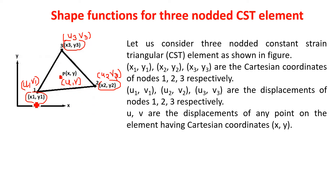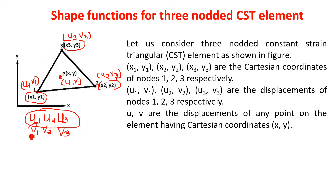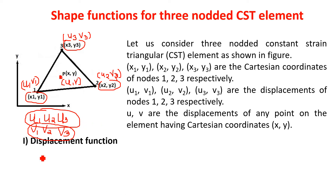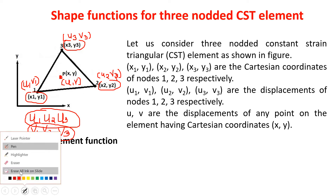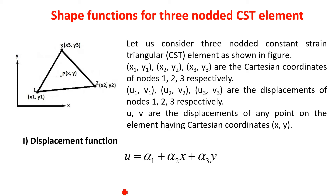In this CST element, there are a total of six degrees of freedom. U1, U2, U3 are the three degrees of freedom in the X direction, and V1, V2, V3 are three degrees of freedom in the Y direction. So to write down the displacement function in X, we consider three degrees of freedom. Using the Pascal triangle, we write the displacement function in X direction as U equal to alpha1 plus alpha2·X plus alpha3·Y.